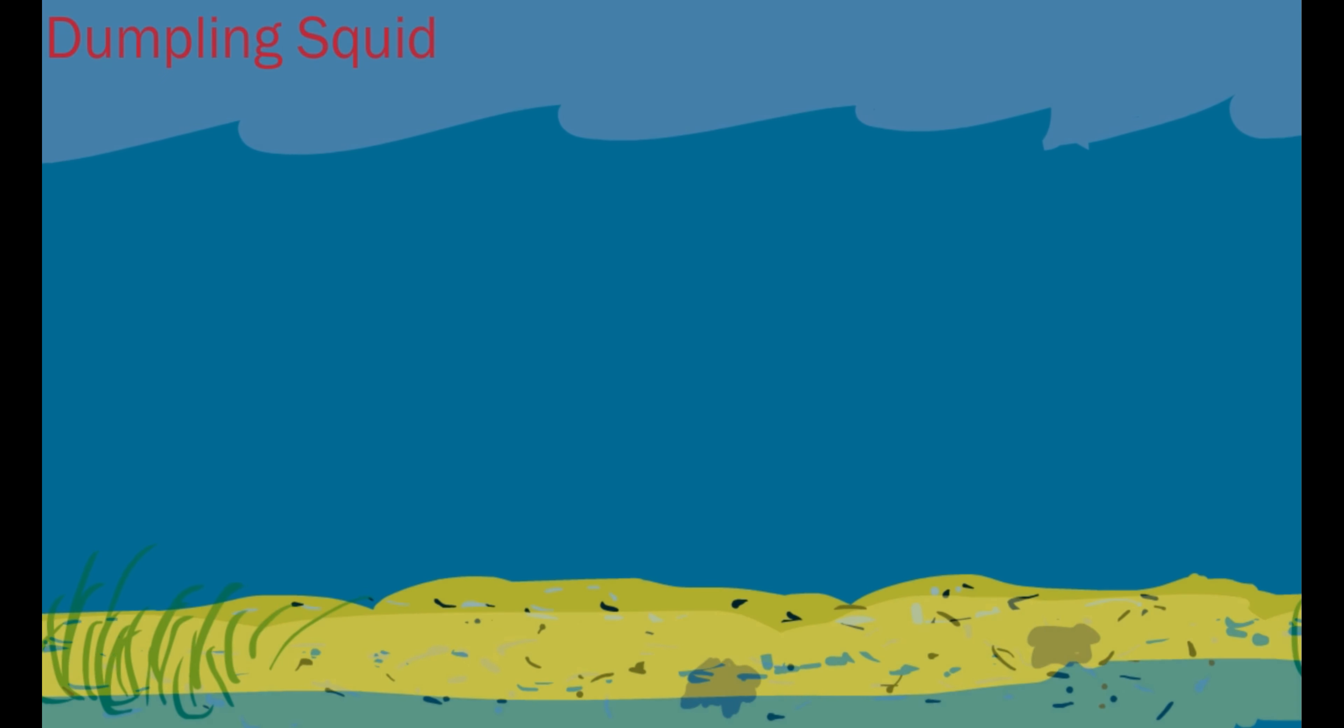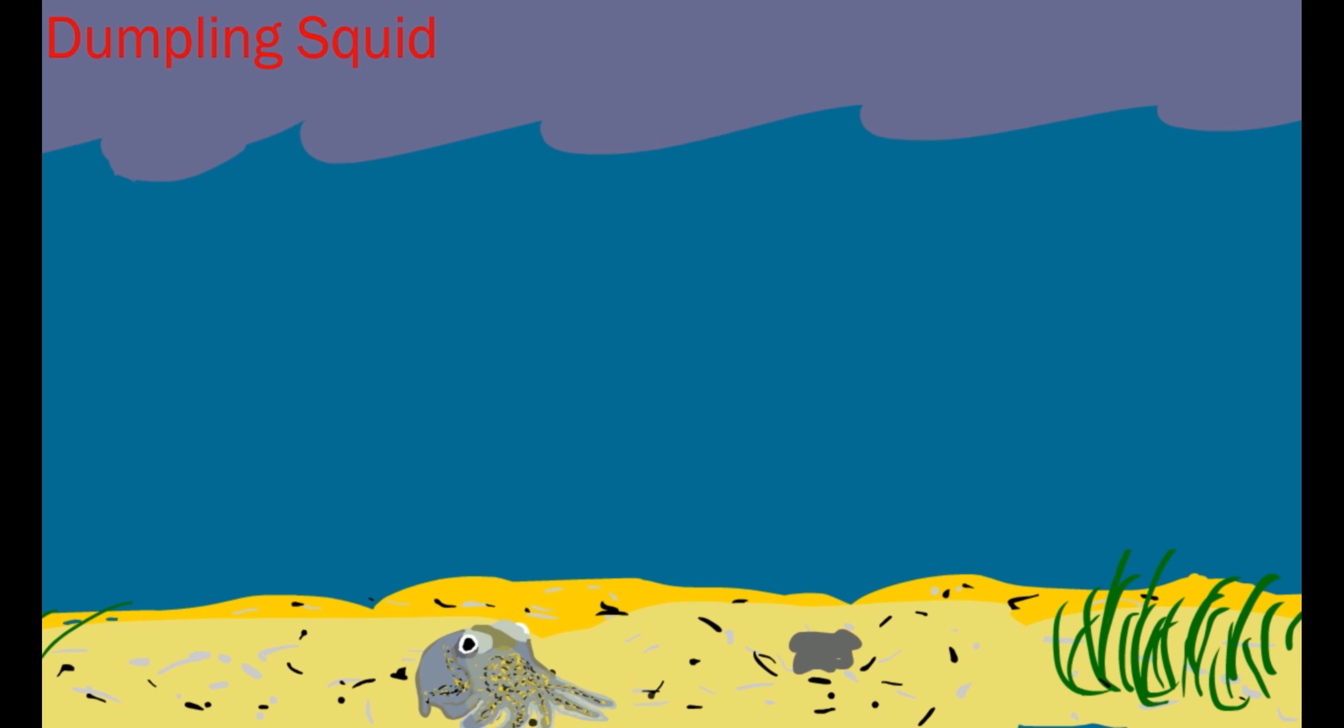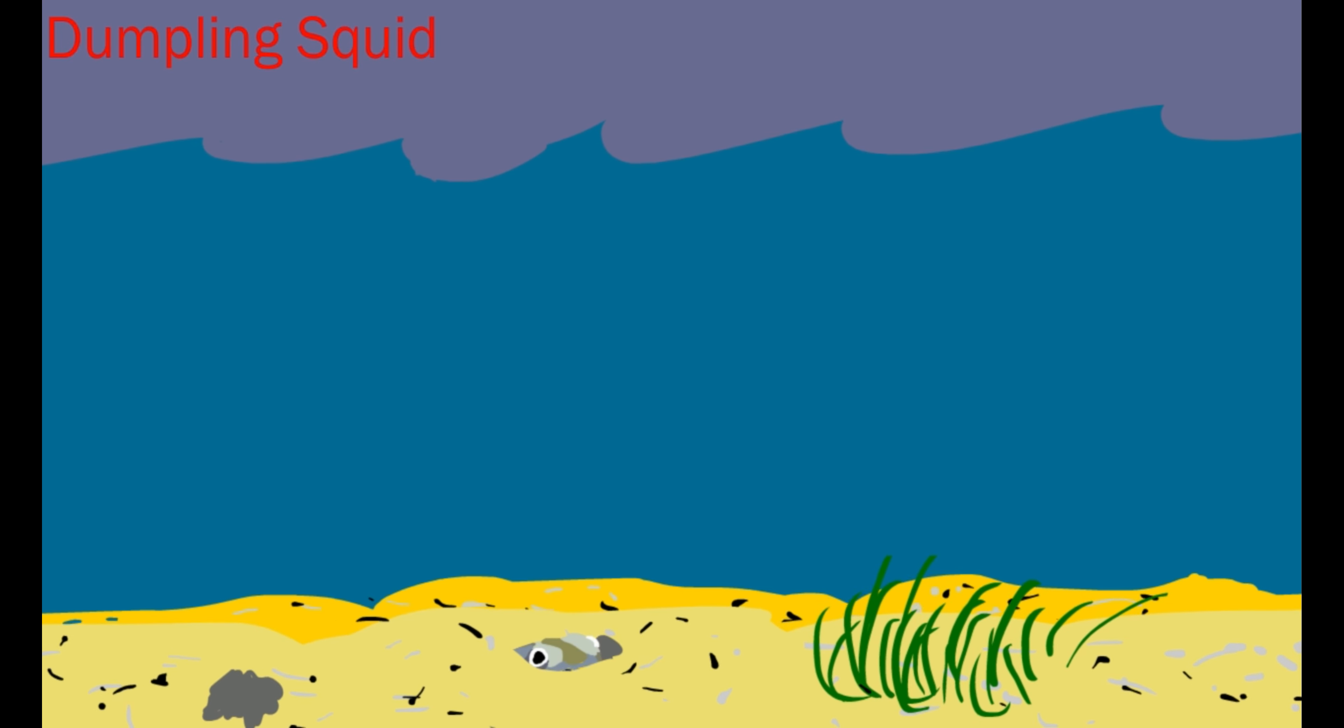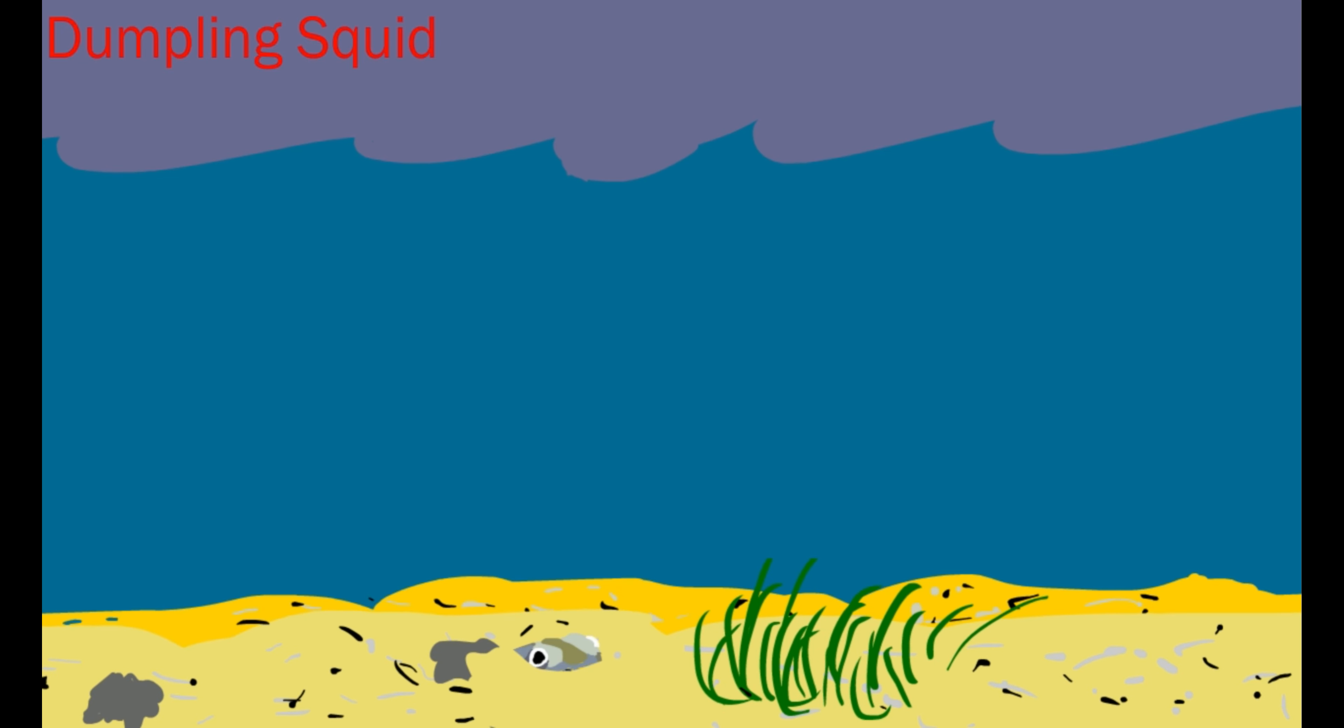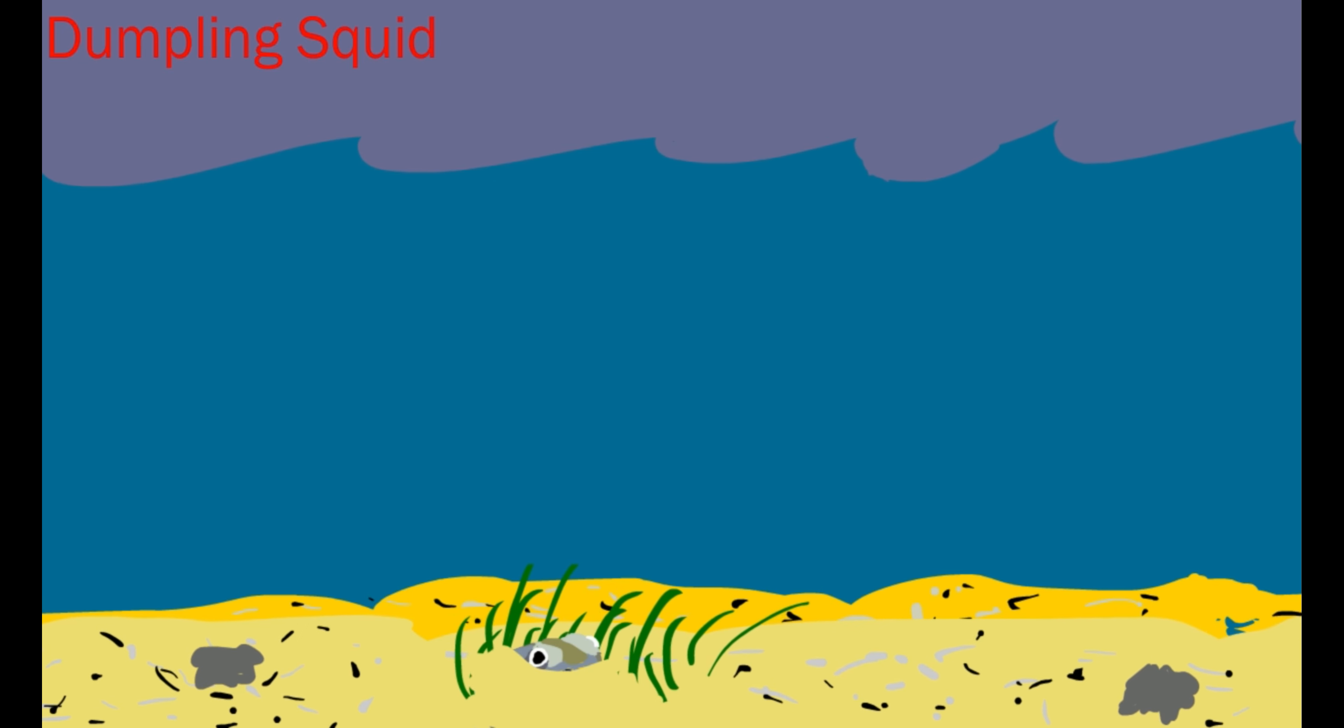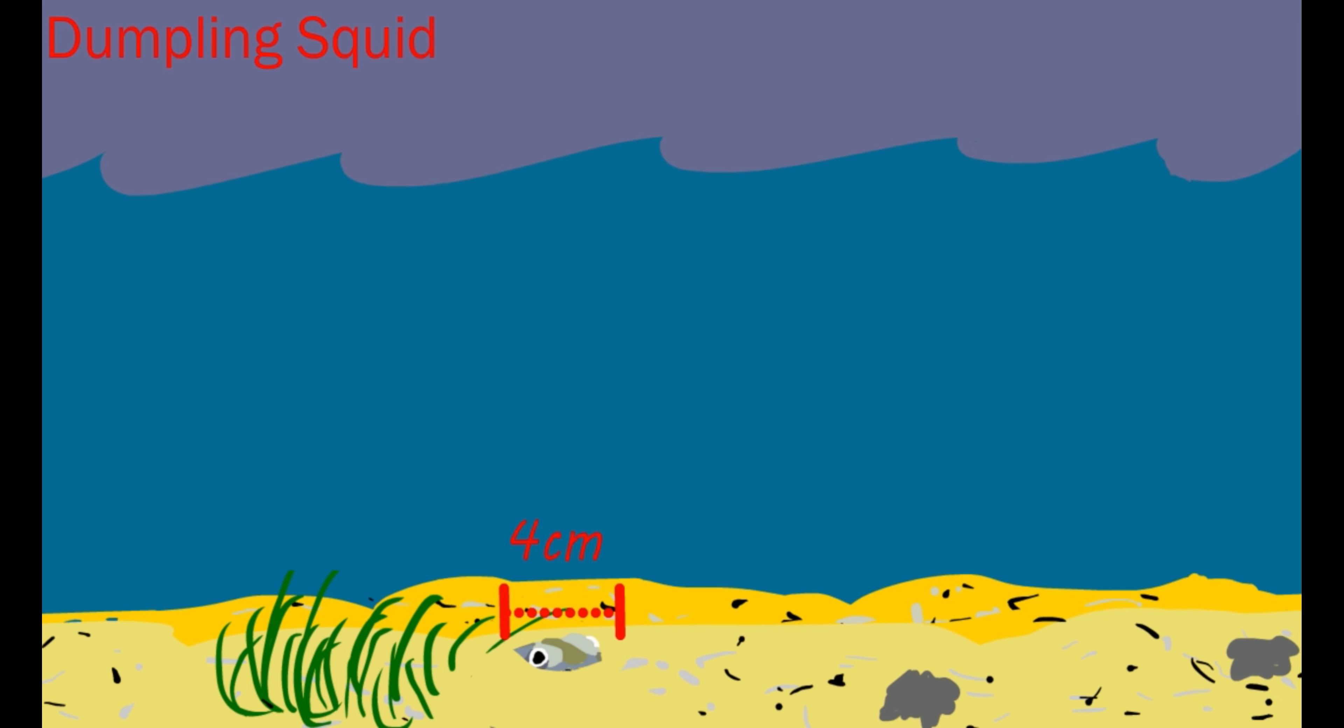Many animals are active at night, with the darkness offering some protection from predators. For example, the dumpling squid is a master of camouflage. They like to burrow into the sand, leaving just their eyes to look for food like shrimp. Some dumpling squid can even stick sand to their skin, covering their 4 centimeter bodies to hide from predators.